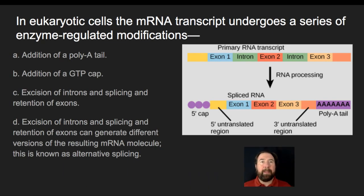So what happens in a eukaryote after you make that primary RNA transcript? Well, we know that there's going to be something called RNA processing. And so in the eukaryotic cells, that RNA transcript is going to go through a series of enzymatic regulation modifications before it leaves the nucleus and heads out and finds the ribosome in order to undergo translation.